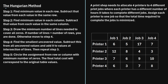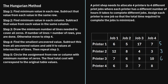We'll solve this using the Hungarian method. Step one says: find the minimum value in each row, then subtract that value from each value in the same row. In the first row, the minimum value is five. In the second row, it's three. In the third row, it's six. And in the fourth row, it's three. Subtracting five from the first row gives 1, 0, 12, and 2. We then repeat this process for each of the rows.